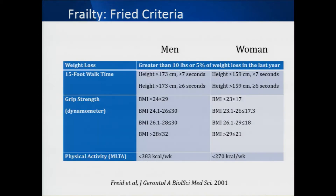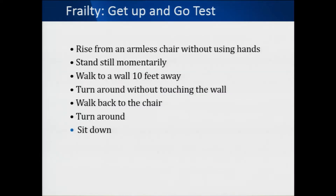There are multiple ways to assess frailty. The FREED criteria is the most widely used, standardized, and validated — though fairly involved and complex. It is broken down by sex and involves weight loss greater than 10 pounds or 5% over the last year, walking speed over 15 feet taking more than six or seven seconds, grip strength relative to BMI, and a physical activity calculation. This is what's done mostly in clinical trials.